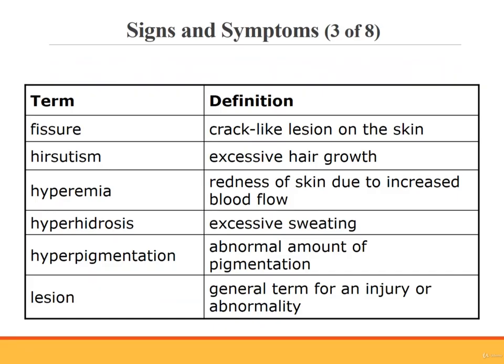A fissure is a crack-like lesion or groove on the skin. Hirsutism is excessive hair growth over the body. Hyperemia is the redness of the skin due to increased blood flow. Hyperhidrosis literally means abnormal condition of excessive sweat; this should not be confused with diaphoresis. Hyperhidrosis is a chronic condition, while diaphoresis is not. Hyperpigmentation is an abnormal amount of pigmentation in the skin. A lesion is a general term for a wound, injury, or abnormality of the skin — for example, a scar is a lesion, and a tattoo is also considered a lesion.